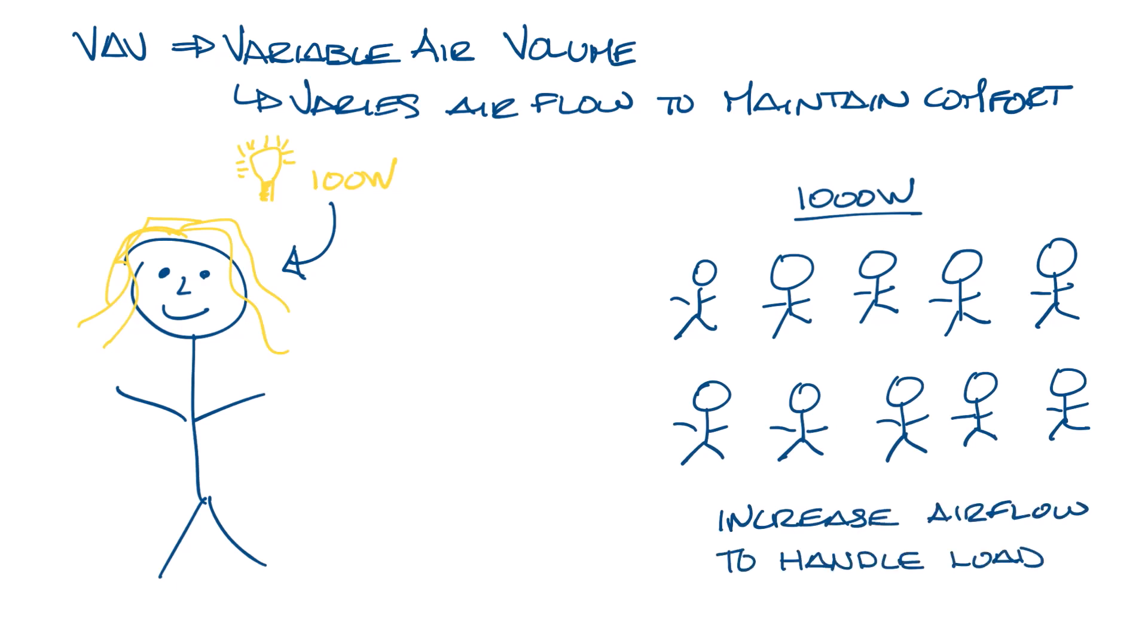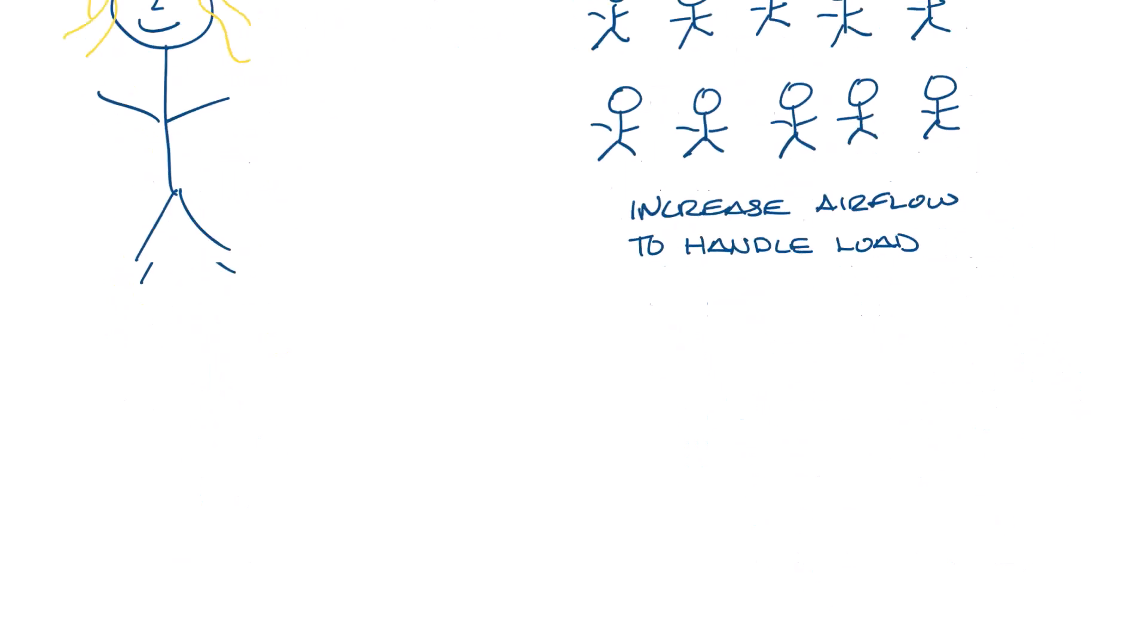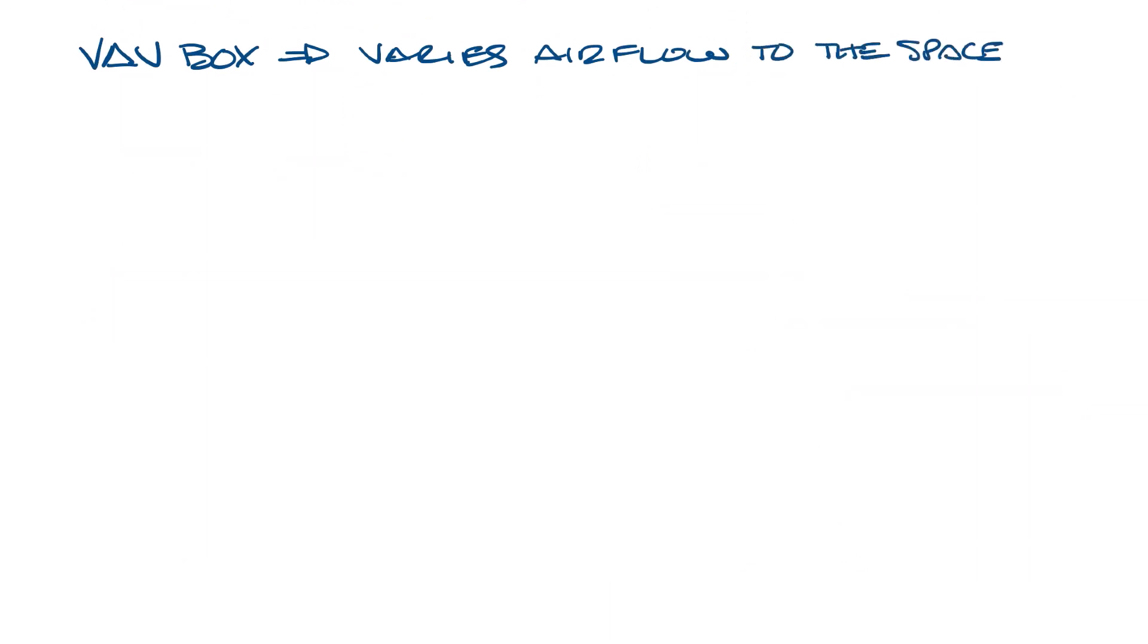Let's move this out of the way and talk about VAV boxes. The VAV box is what actually varies the airflow into the space. The single duct box is the simplest and most common VAV box. There are a couple other types of VAV boxes, such as dual duct and fan powered boxes, but I'll discuss them in future videos. The basic operation of these boxes is the same as the single duct box.